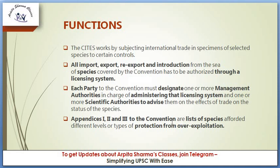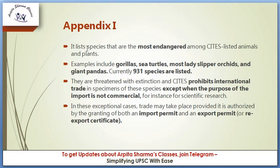Appendices 1, 2, and 3 to the Convention are lists of species accorded different levels or types of protection from overexploitation. Appendix 1 lists species that are most endangered among CITES-listed animals and plants — examples include gorillas, sea turtles, most lady slipper orchids, and giant pandas. Currently 931 species are listed in Appendix 1. They are threatened with extinction and CITES prohibits international trade in specimens of these species, except when the purpose of import is non-commercial, for instance for scientific research.